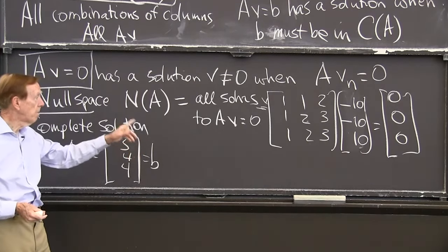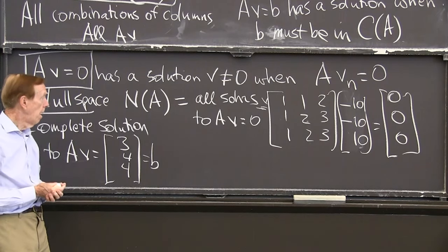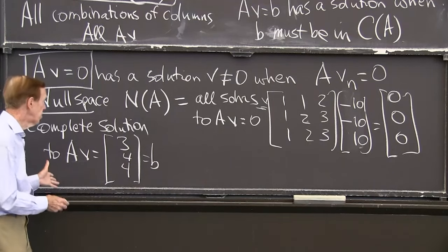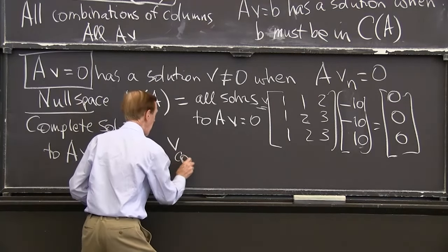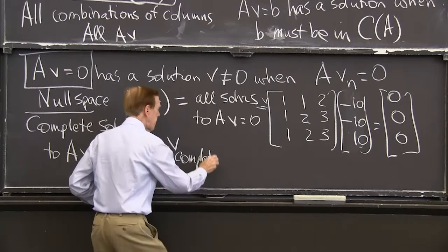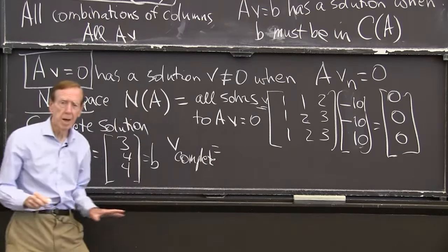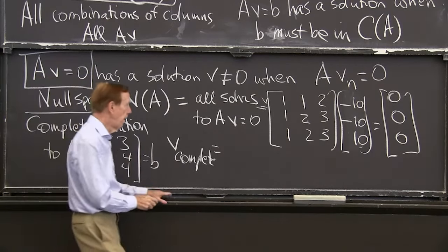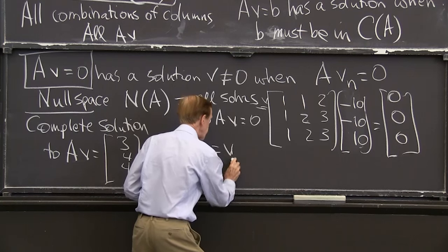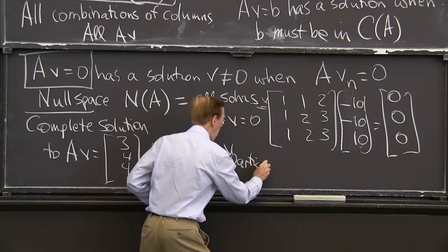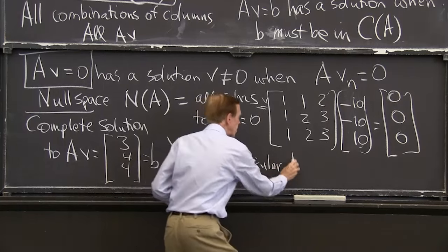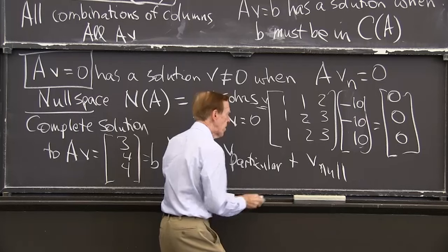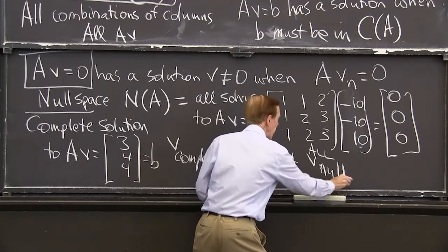So now I ask, what are all the solutions? It's in the column space. It's two times the first column plus the second column. But there may be other solutions. So all solutions, a complete solution, V complete. Here's the key idea. And the point is that it's the same that we know from differential equations. It's one solution plus any null solution. Plus all, you could say all, V null. Particular plus null solution. And it's such an important concept, we just want to see it again.